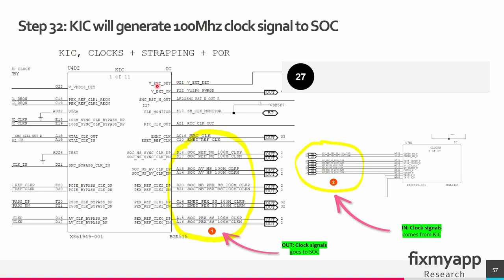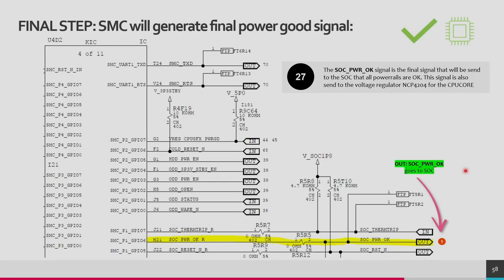When the CPU core and graphics core power rails are generated successfully, the NCP sends a power good signal back to the Southbridge IC called voltage regulator CPU graphics power good. When this signal is received by the Southbridge IC, it starts generating a 100 MHz clock signal to the SoC. This is the last step in the power on sequence — the Southbridge sends the final signal called SoC power OK to the SoC. When the SoC receives this signal, you should get a picture on your screen. If no picture appears but all voltages are present, there may be a corrupted software, a bad SoC chip, broken solder balls under the BGA chip, failing components such as resistors, capacitors or transistors, a bad memory module, or a bad BIOS.